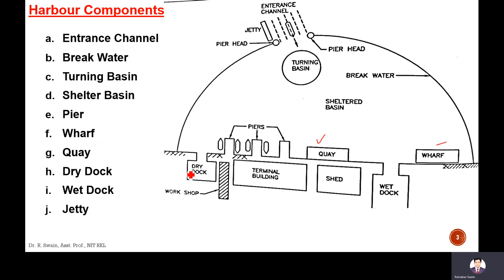Dry dock is a place — you can see it is dry, there is no water here — where repair work is carried out. In the wet dock, loading and unloading of cargo is also carried out. And the jetty is actually a narrow platform which can be made inside or outside of the harbour, also used for loading and unloading of materials.